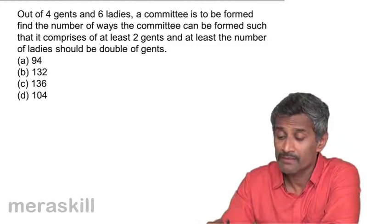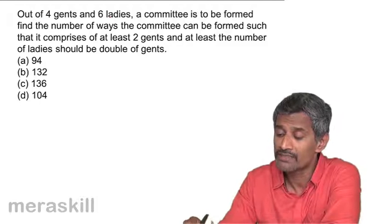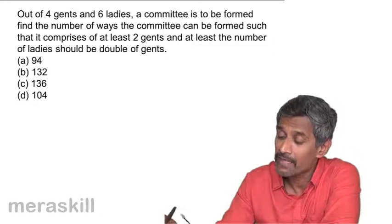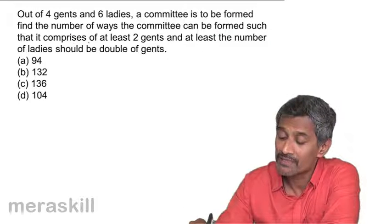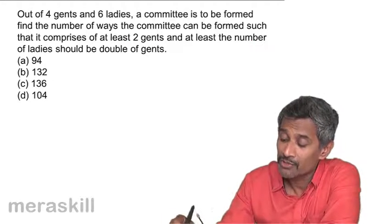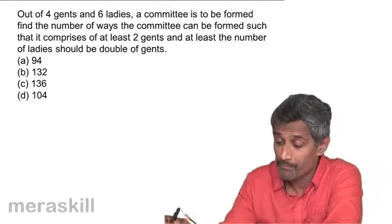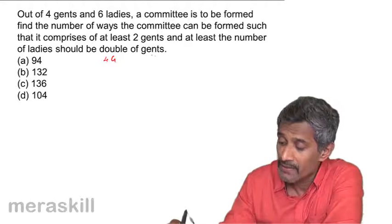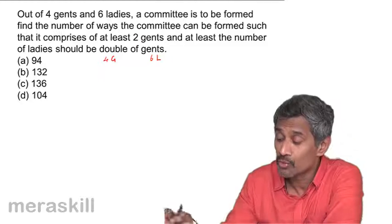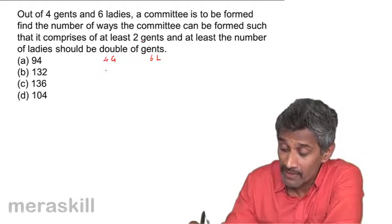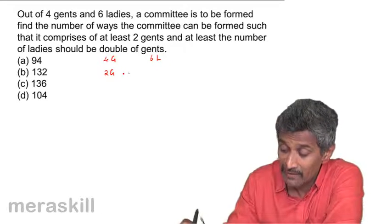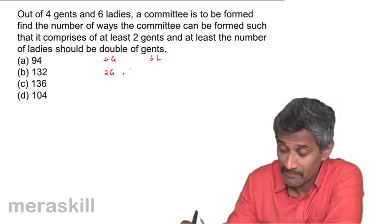Our next question: out of four gents and six ladies, a committee is to be formed. Find the number of ways the committee can be formed such that it comprises at least two gents and the number of ladies is at least double the number of gents. So with at least two gents, the possible cases begin with two gents and four ladies.